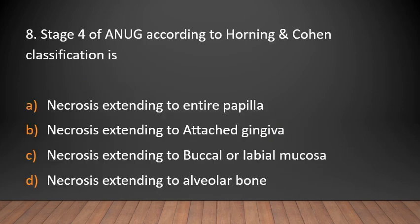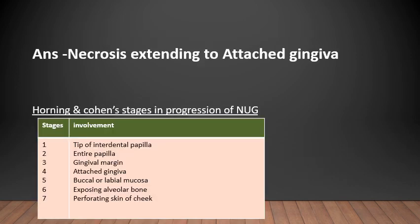MCQ 8: Stage 4 of ANUG according to Horning and Cohen's classification is — necrosis extending to anterior papilla, necrosis extending to attached gingiva, necrosis extending to buccal or labial mucosa, or necrosis extending to alveolar bone? Answer: Necrosis extending to attached gingiva. According to Horning and Cohen's classification, there are seven stages: Stage 1 — necrosis of tip of interdental papilla, Stage 2 — necrosis of entire papilla, Stage 3 — necrosis extending to marginal gingiva, Stage 4 — necrosis extending to attached gingiva, Stage 5 — necrosis extending to buccal or labial mucosa, Stage 6 — necrosis exposing the alveolar bone, Stage 7 — necrosis extending further.